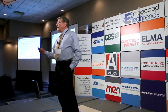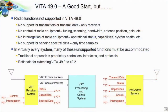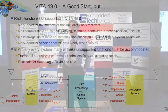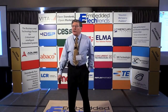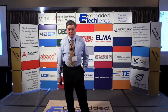Vita 49.0 allows a lot of flexibility in terms of applications, but it was a good start that didn't do a lot of things we need. For one thing, it didn't handle transmitters — how do you handle a transceiver? Radar needs a transmitter. There was no control of the radio equipment, no way to interrogate whether the system is working correctly or is healthy, and no information about its capabilities.